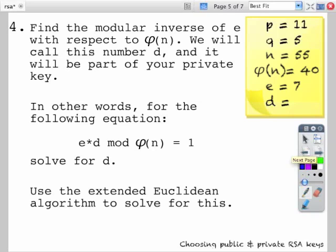For the next step we need to find the modular inverse of e with respect to the totient. We'll call this number d and it's going to be part of our private key. So for the following equation, e times d mod the totient equals 1, we need to solve for d. And we'll do this by using the extended Euclidean algorithm.